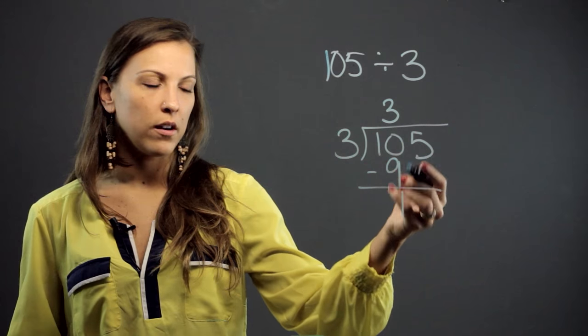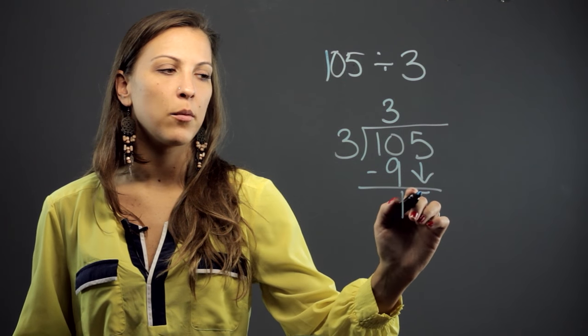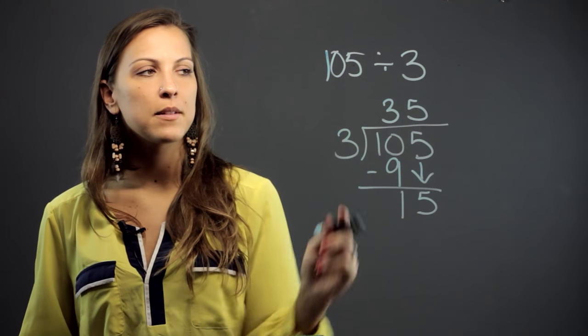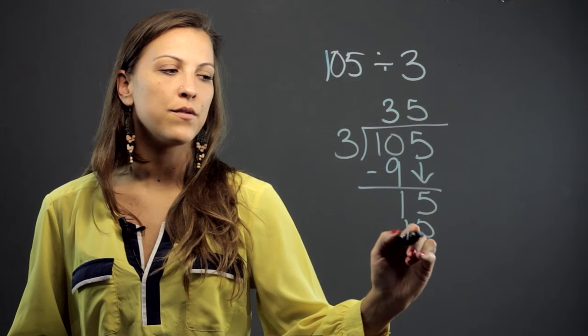And we ask ourselves, can 3 go into 1? It can't. So we bring down the next number, which is a 5. And we do 3 into 15, which goes 5 times. 5 times 3 is 15.